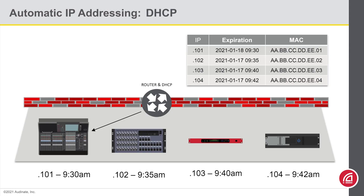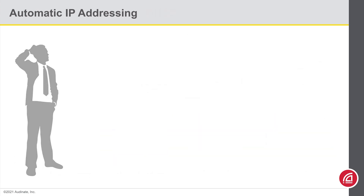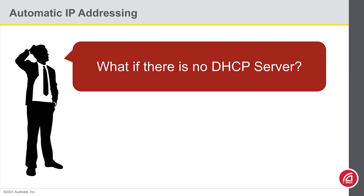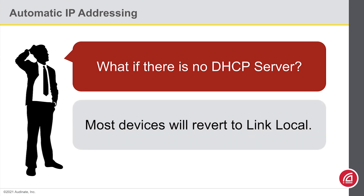To avoid that, the DHCP server will try to keep everybody at the same address. So if everything goes as planned, we contact the DHCP server and get a configuration. But what happens if you're set to automatic addressing and there is no DHCP server? The automatic option will try DHCP first. If that fails, it flips over to a protocol called LinkLocal.